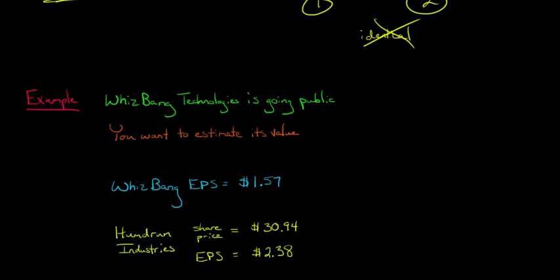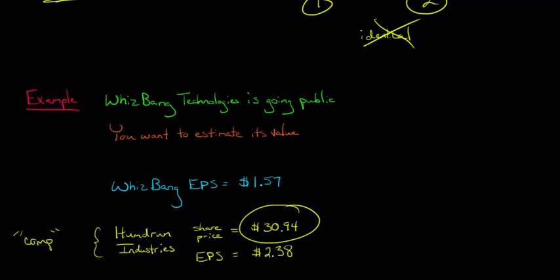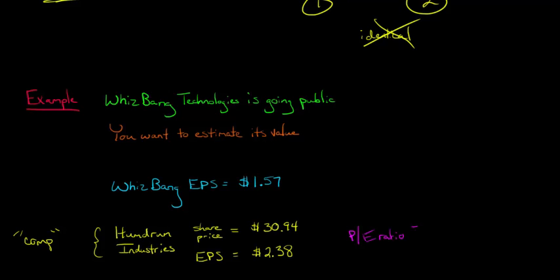The great thing is that we've got Humdrum Industries as our comp — a comparable firm. Humdrum Industries has a lot in common with Whiz-Bang, so we can use them as a benchmark to estimate the price for Whiz-Bang. We do know Humdrum's share price: it's $30.94 a share. We also know their earnings per share: $2.38 a share. So now we can calculate their P/E ratio — $30.94 divided by $2.38 — and that gives us 13.